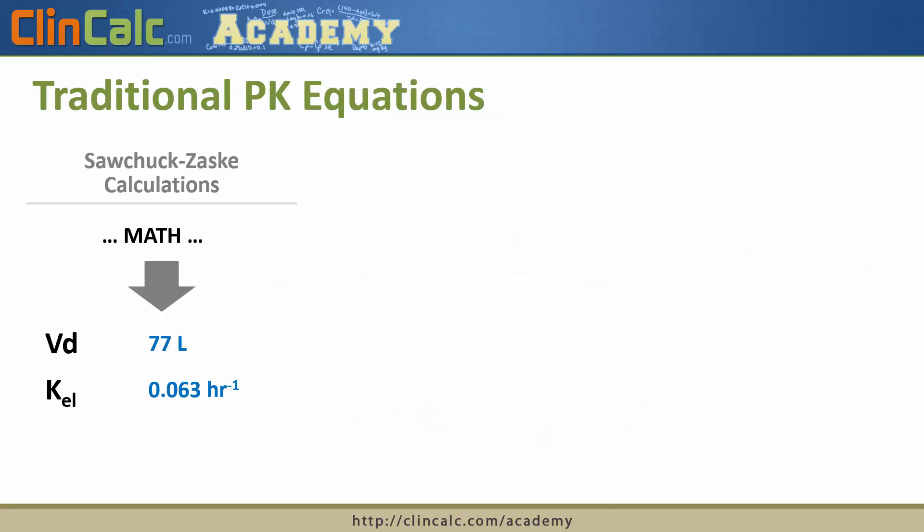Now, what happens is, using the Sawchuk-Zaski method, we'll use the math that we just went through to come up with a patient-specific volume of distribution and a patient-specific elimination constant. And there is a relationship between these two terms called clearance that we can also calculate as well, but really these two terms are what we need for equations that come next.